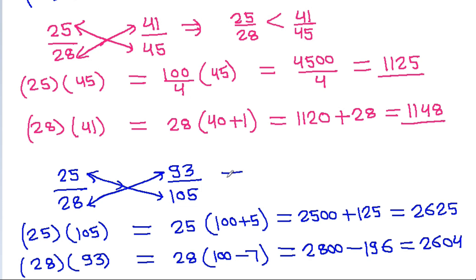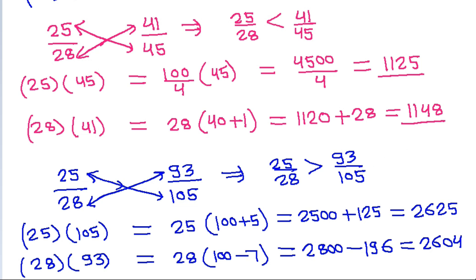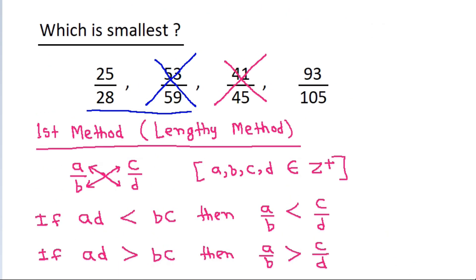That means 25/28 will be greater than 93/105. So 25/28 is not the smallest. Therefore, the smallest number is 93/105.